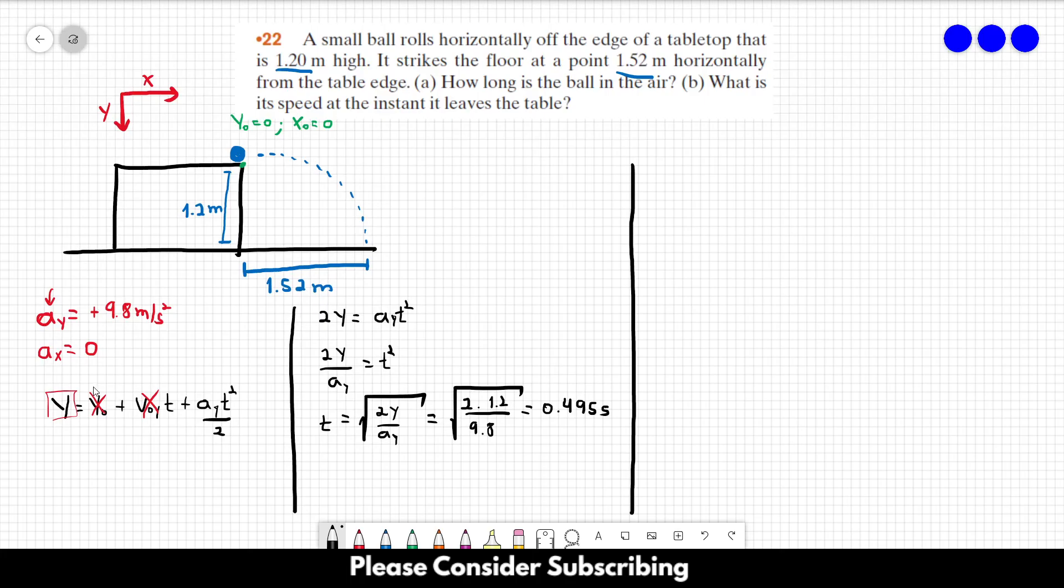For letter B, we can use the same equation but for the x direction. So x equals to x0 plus v0x t plus ax t squared over 2. The initial x is 0, the acceleration in the x direction is 0 as well.